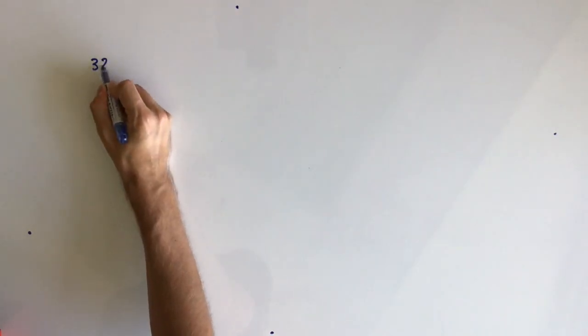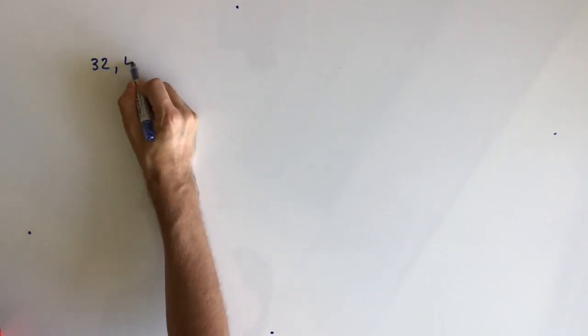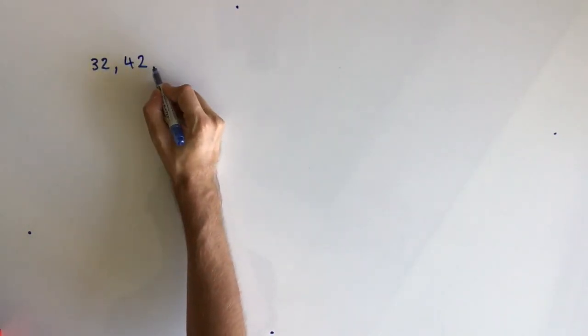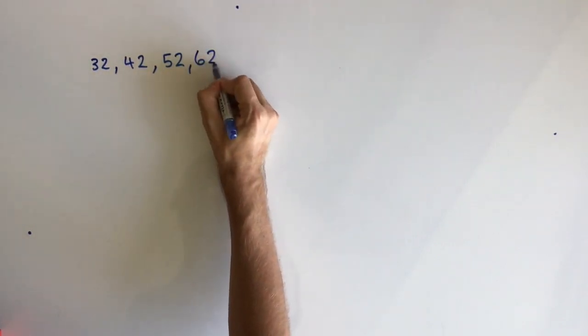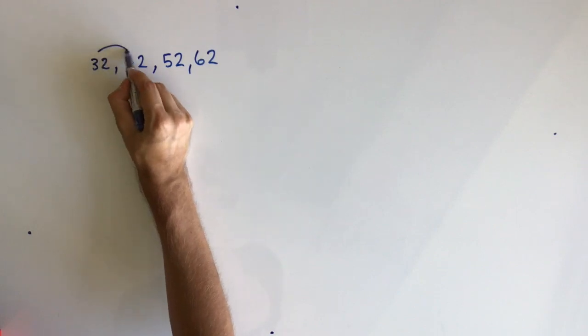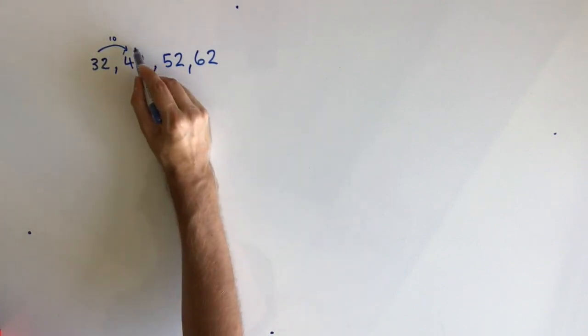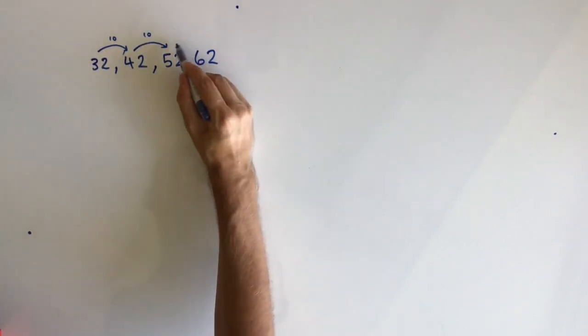So I'll start with 32, 42, 52, 62, and you can see each time I've gone up in tens.